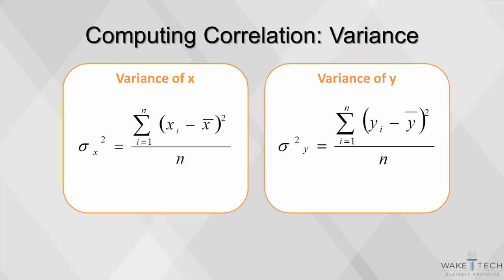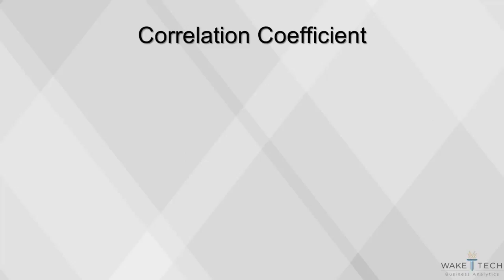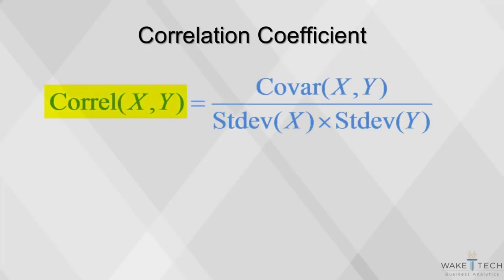The variance is the dispersion within a variable x or y, or the squared average deviation from the mean. The covariance is the dispersion of x multiplied by the dispersion in y, calculated as the average of the product of deviations from individual means. Using variance and covariance, we compute the correlation coefficient as the covariance of x and y divided by the standard deviation of x multiplied by the standard deviation of y. This measure of correlation ranges from negative 1 to positive 1.